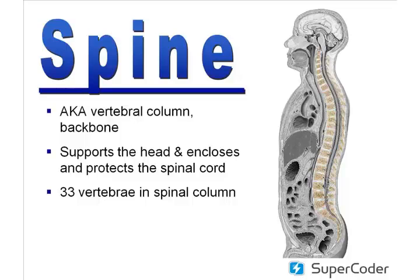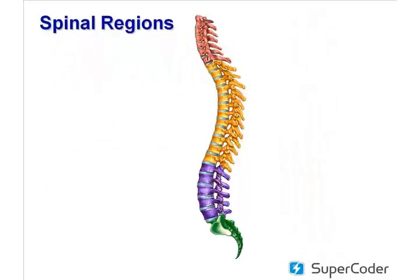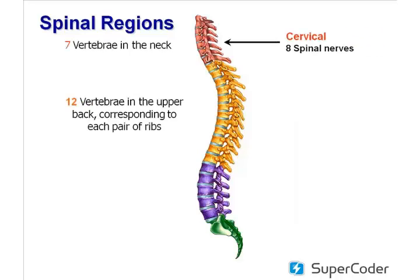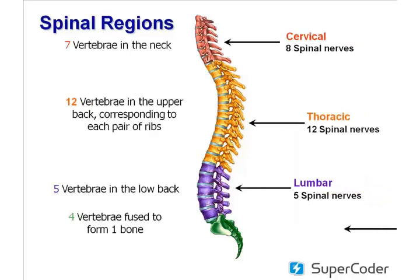Vertebrae are often referred to by their name and number, starting from the head going downward. Cervical vertebrae are referred to as C1 through C7. Thoracic as T1 through T12. Lumbar as L1 through L5. There are some patients who have a congenital anomaly and may have a partial or fully formed L6, but that is considered unusual and not the standard.